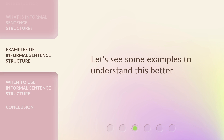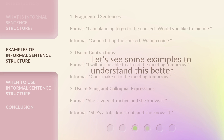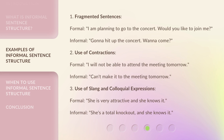Let's see some examples to understand this better. First, fragmented sentences. Formal: 'I am planning to go to the concert. Would you like to join me?' Informal: 'Gonna hit up the concert. Wanna come?'